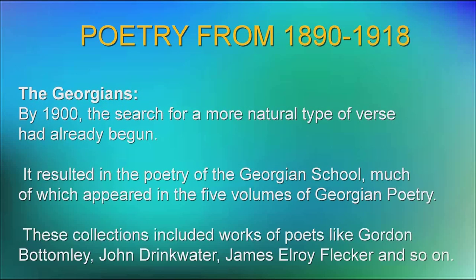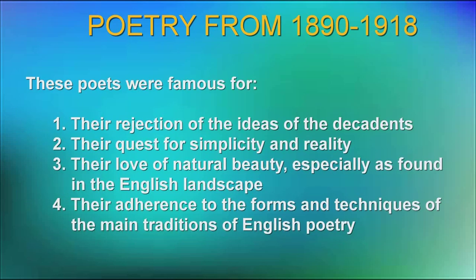The Georgians. By 1900, the search for a more natural type of verse had already begun. It resulted in the poetry of the Georgian school, much of which appeared in the five volumes of Georgian Poetry. In addition to the works of Rupert Brooke, Edmund Blunden, W.H. Davis, Walter de la Mare, and Lascelles Abercrombie, these collections included works of poets like Gordon Bottomley, John Drinkwater, James Elroy Flecker, and so on. Do remember the names. These poets were famous for their rejection of the ideas of the Decadence, their quest for simplicity and reality, their love of natural beauty especially as found in the English landscape, and their adherence to the forms and techniques of the main traditions of English poetry.